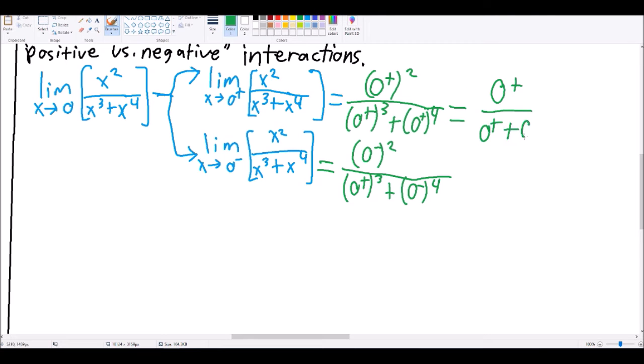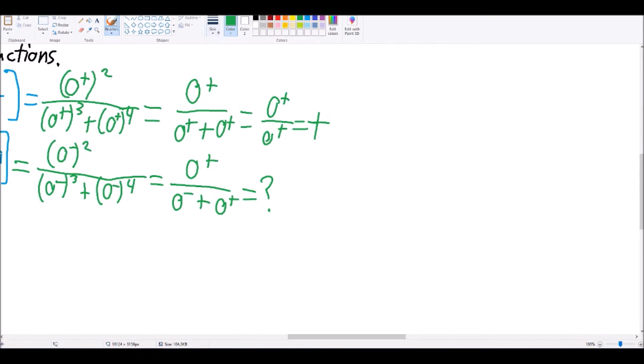So, a number that's negative to an even power becomes positive. So we can take advantage of that. And any positive number to any power is still gonna be positive.